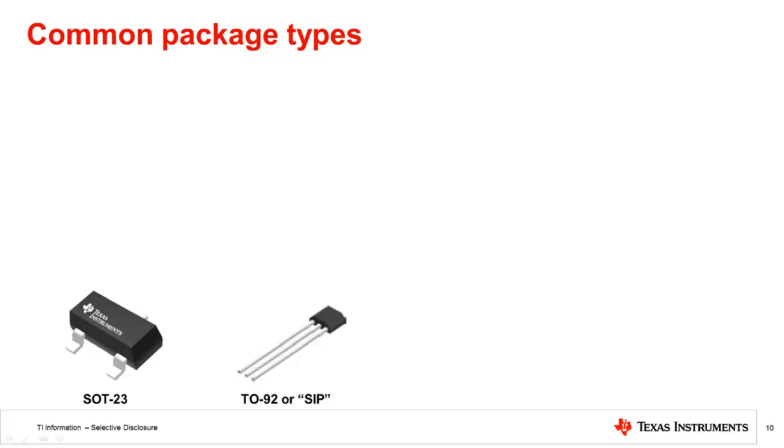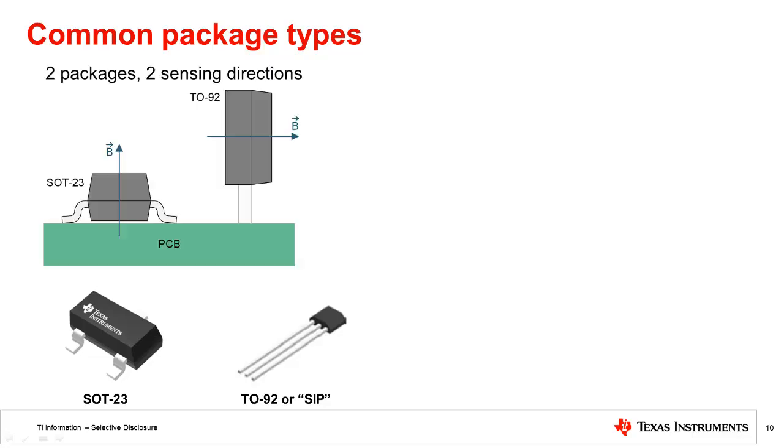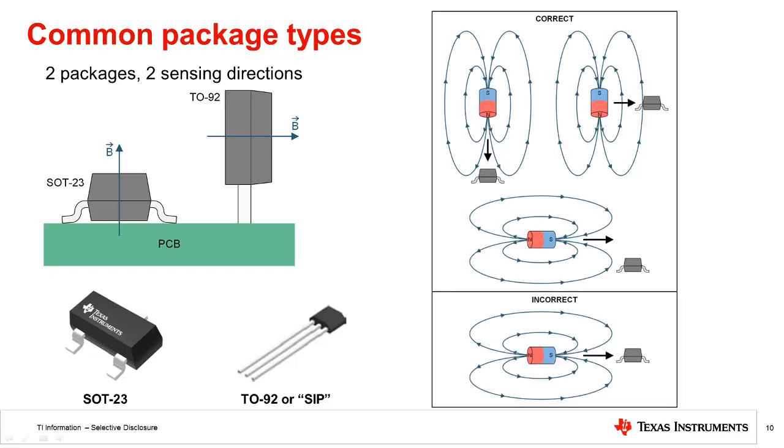SOT-23 and TO-92 packages are industry standard packages. Most Hall sensors are sensitive to magnetic fields that are perpendicular to the face of the package. Once soldered onto the PCB, the two packages offer two different sensing directions. A correct magnet approach must be used for the sensor to detect the field. The correct and incorrect approaches are shown here.